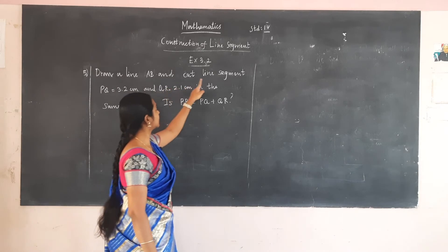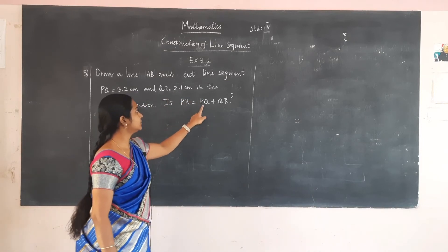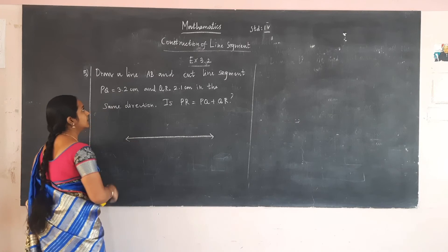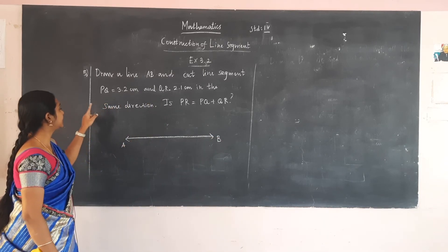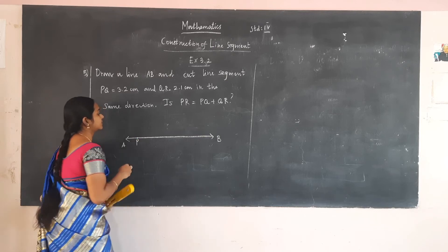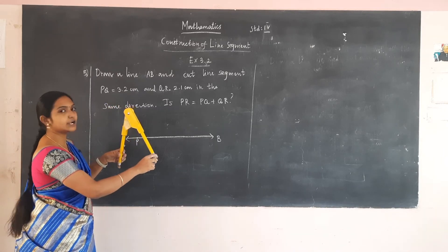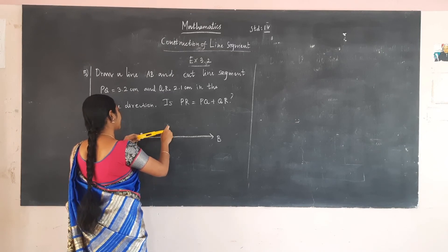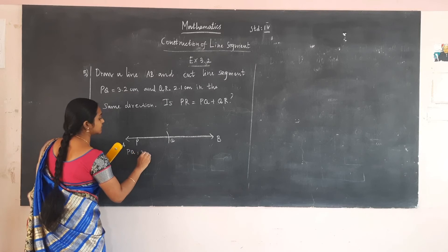The fifth question is: draw a line AB and cut line segment PQ equal to 3.2 cm and QR equal to 2.1 cm in the same direction. Is PR equal to PQ plus QR? First, draw a line AB using a scale. Now draw line segment PQ equal to 3.2 cm. Keep a point P, place the sharp point on 0, and move towards the right until you reach 3.2 cm.